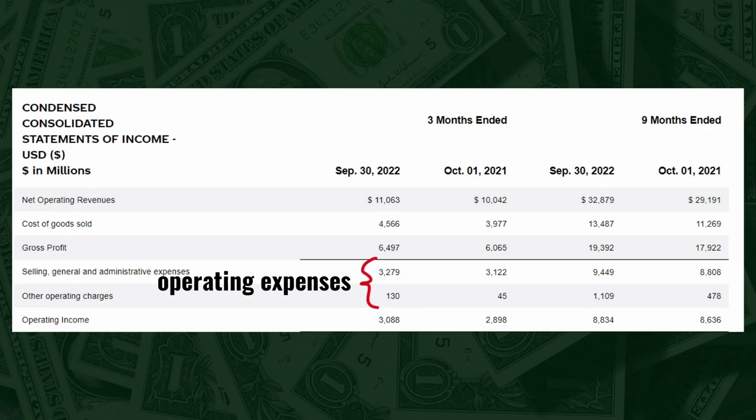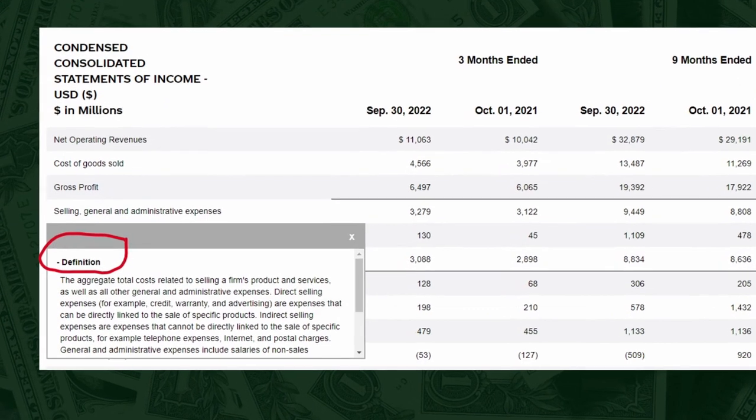Gross profit only accounts for the cost of goods sold, but there are lots of other costs like administrative, research and development, and interest expenses. These are called the operating expenses. A company with high gross profit can actually be a bad investment as well. After gross profit, we have operating expenses — costs that are not captured in the cost of goods sold line, such as research and development, administrative, depreciation and amortization, and so forth. Subtracting operating expenses from gross profit gives us the operating profit or loss.